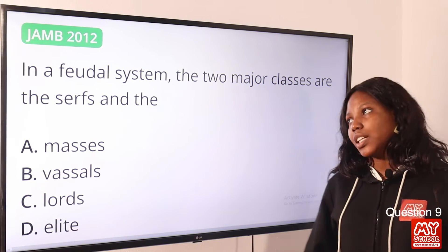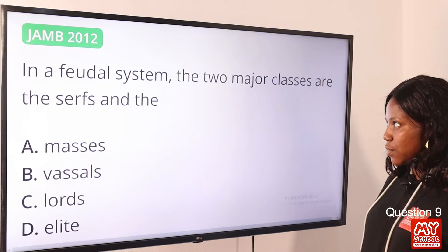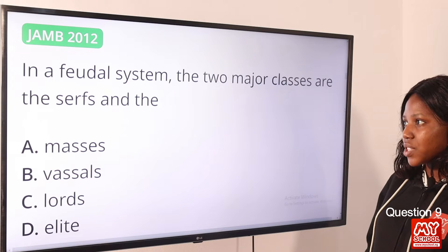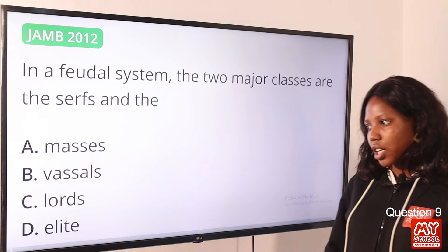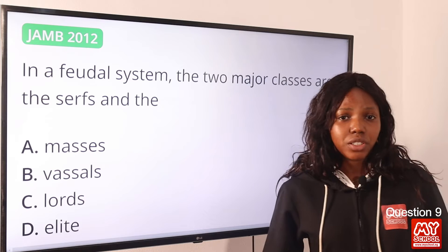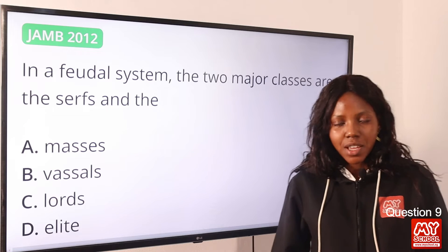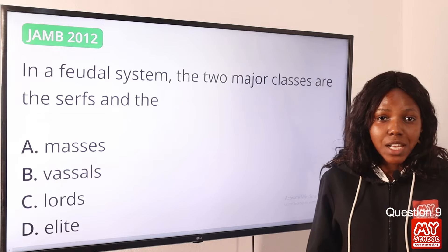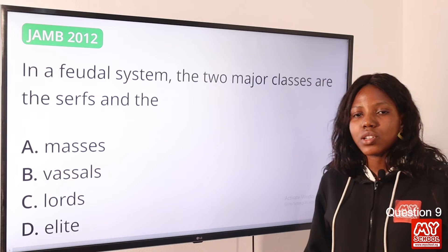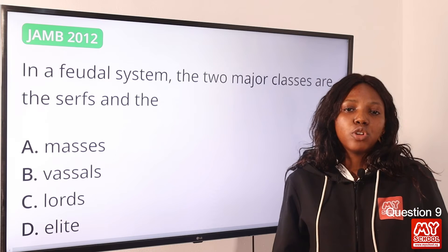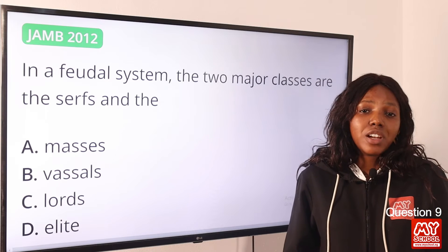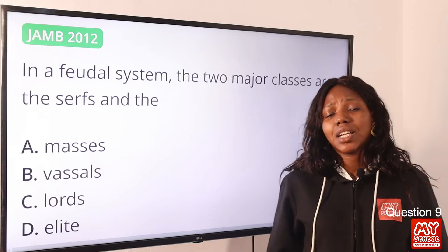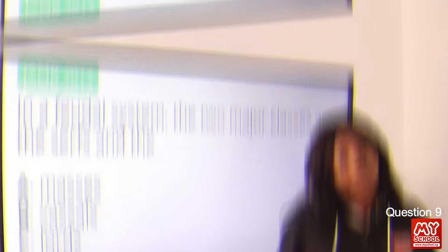Question 9: In a feudal system, the two major classes are the serfs and the — the answer is option C, lords. The serfs are the peasants or commoners, while lords are generally those in control. So option C is the correct answer.